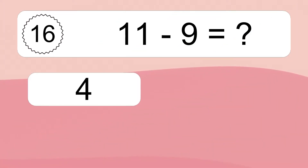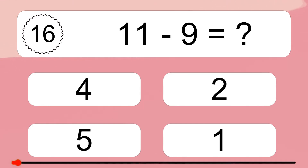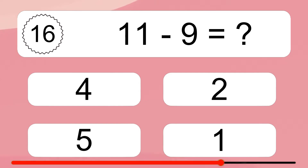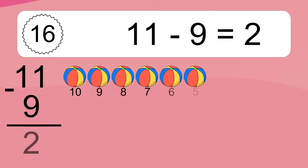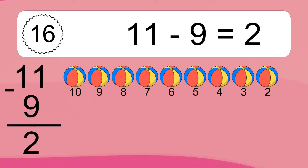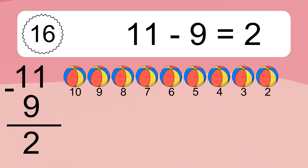11 minus 9 equals what? 11 minus 9 equals 2. Let's count it: 10, 9, 8, 7, 6, 5, 4, 3, 2.